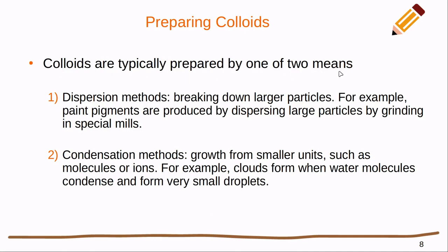Colloids are typically prepared by one of two means. The dispersion method breaks down larger particles into smaller particles until they're small enough to be evenly dispersed and form a stable colloid. Condensation methods take smaller units — molecules or very small particles — and build those up until they are large enough to form a colloid. So you can go from really small and build up, or take larger particles and break them down.